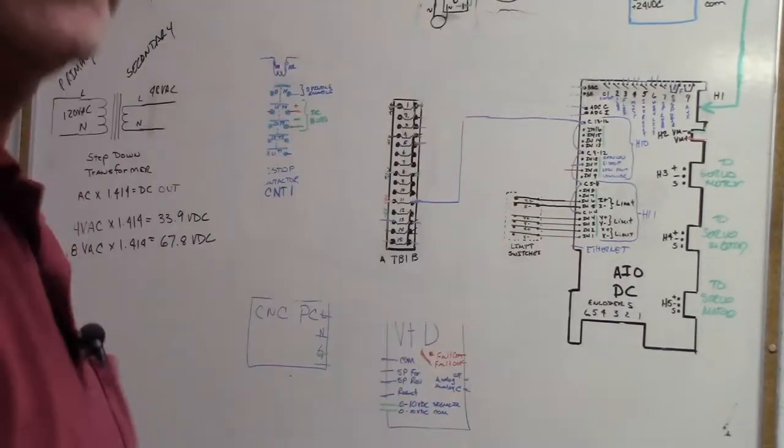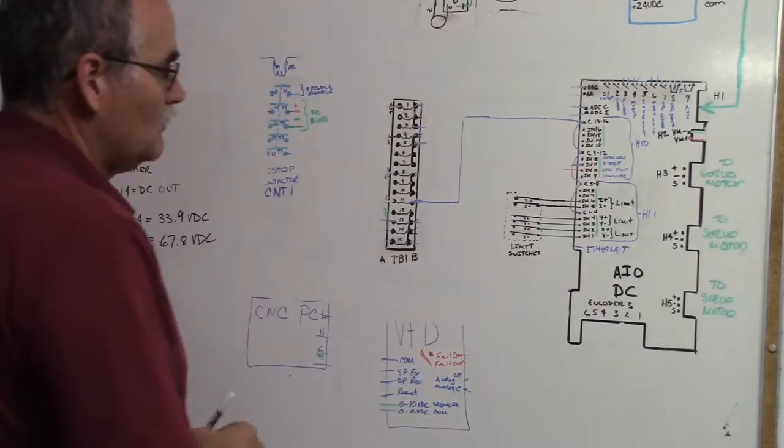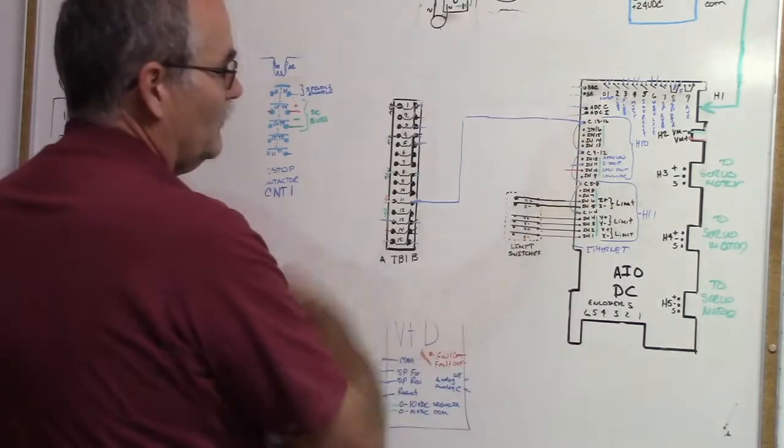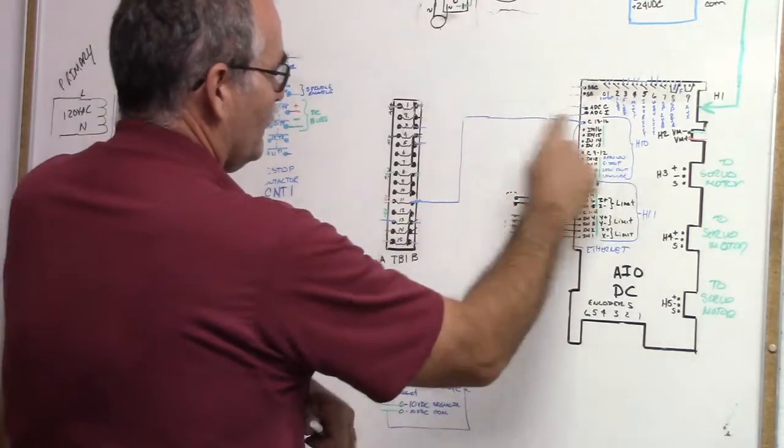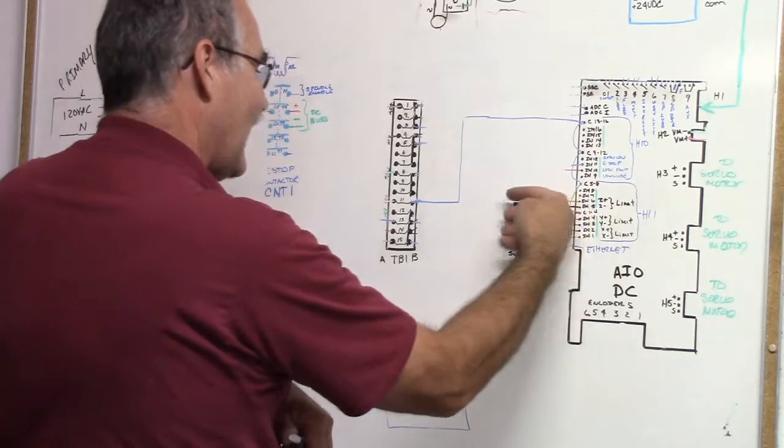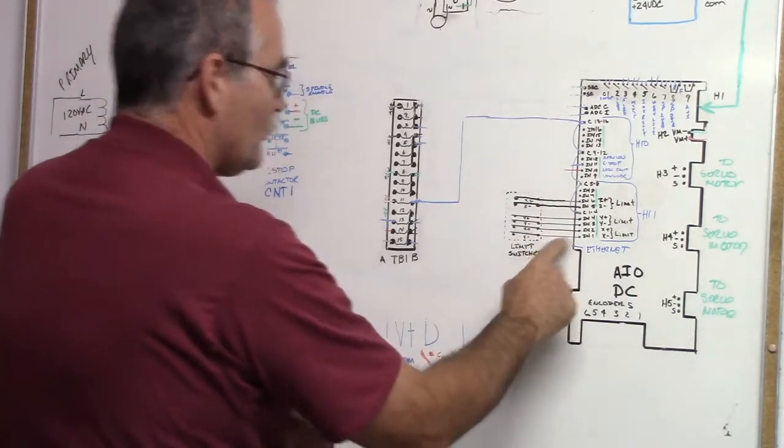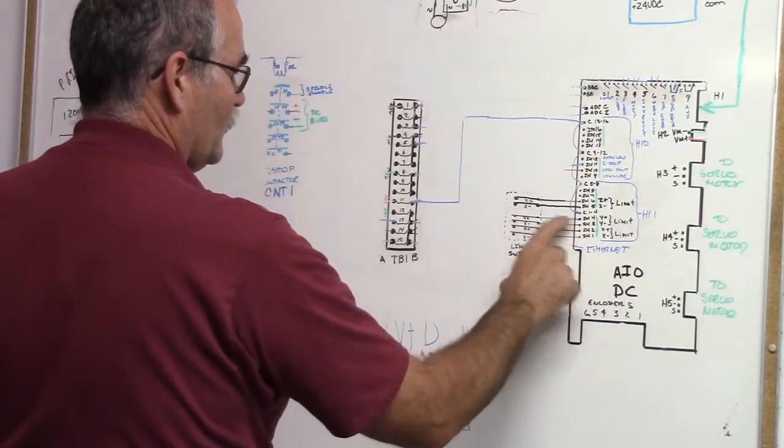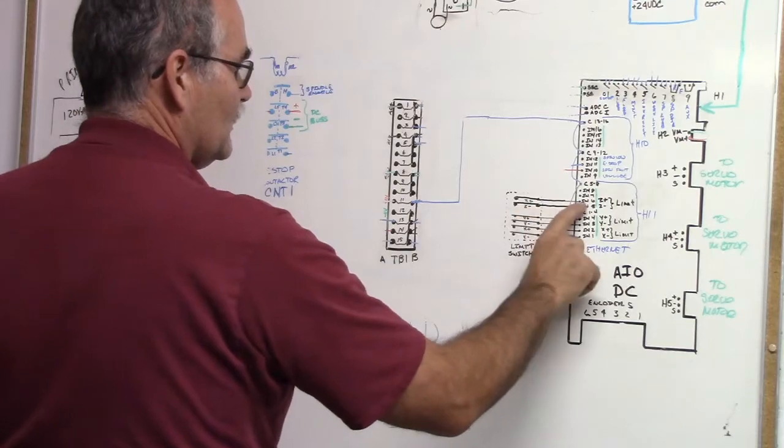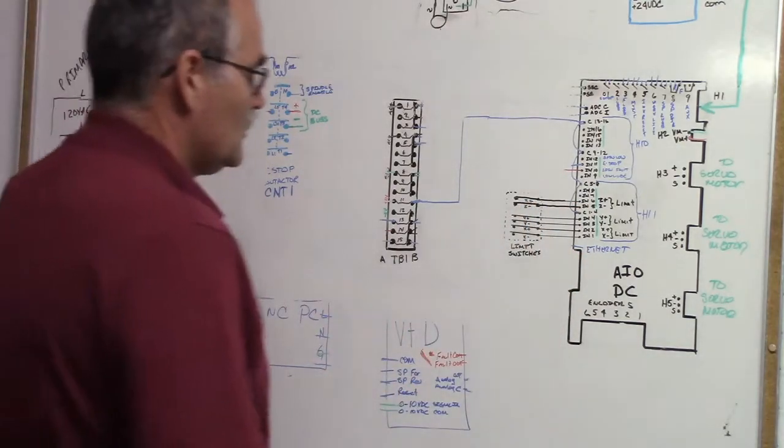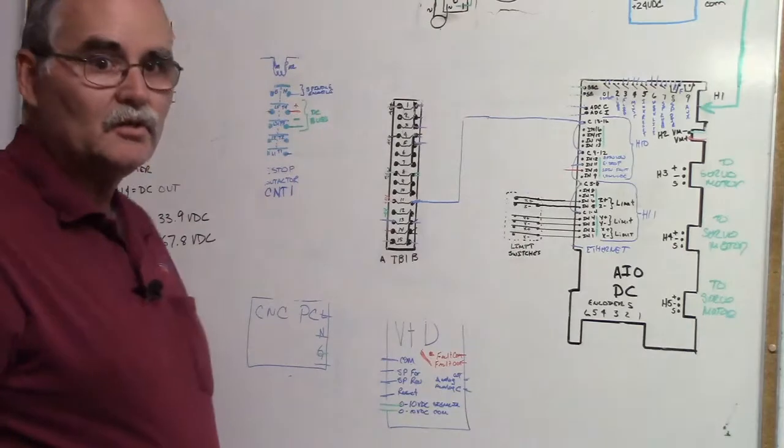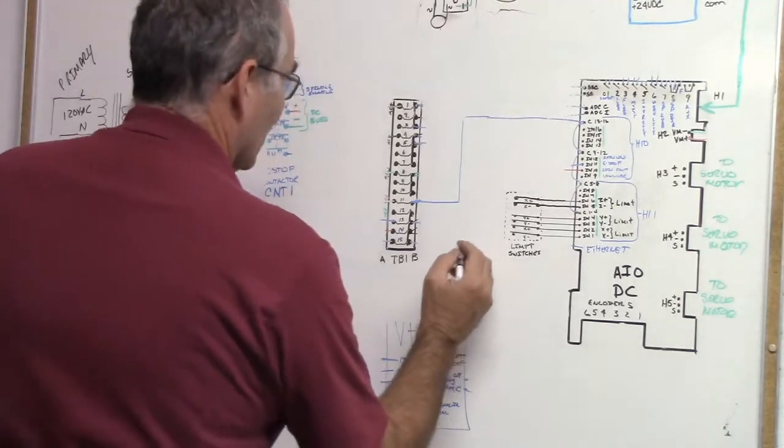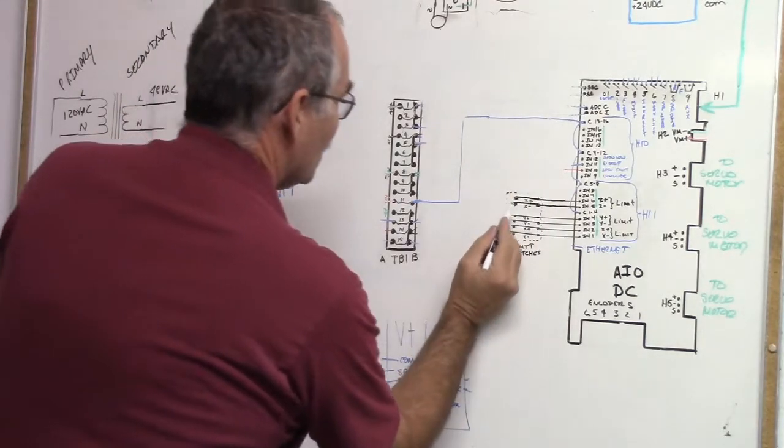Basically, remember we had 24 volts going into the commons of H11 and H10, so 24 volts goes in and then it's coming out going to your limit switches. These are pre-programmed: input 1 is X negative, input 2 is X positive, input 3 is Y negative, input 4 is Y positive, input 5 is Z negative, input 6 is Z positive. So what do we need to do? It's simple. The other end goes to the grounds.